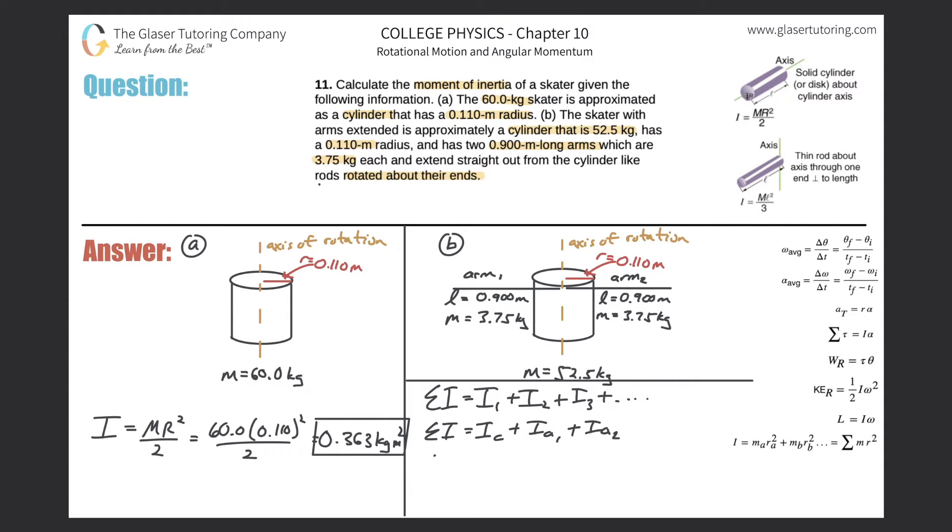Now just start expanding on the I's. The inertia of the cylinder is given by the formula up here on the right—the mass of the cylinder multiplied by the radius of the cylinder squared divided by two. Next I have the inertia of the arm here rotating about its end.